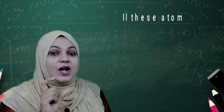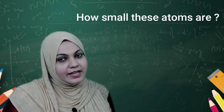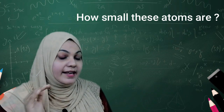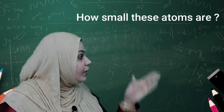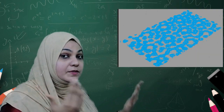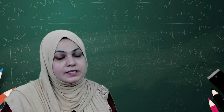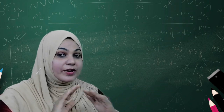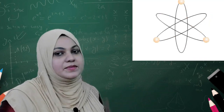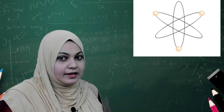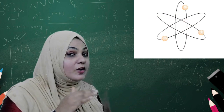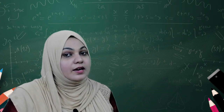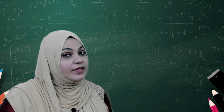Our next topic is how small these atoms are. We can't ever imagine how small these atoms are, because atoms are smaller than anything we can imagine. When you look at the silicon sheets, you can see millions of atoms on its surface. Since the atoms are very small, why should we take care of them? We have to take care of them because our entire world is made up of atoms. We can't feel them, but they are there and constantly affecting whatever we do.